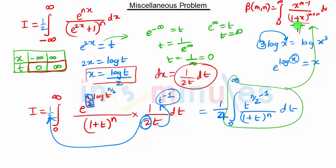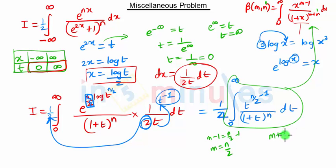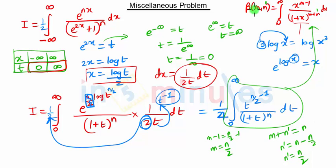Comparing this term with the Beta function form, m minus 1 equals n/2 minus 1, so m is n/2. And if m plus n-dash equals n, then n-dash equals n minus m, and since m is n/2, n-dash is also n/2. So this integral is Beta of m comma n-dash, which is Beta of n/2 comma n/2.